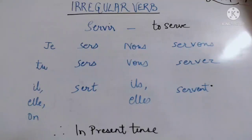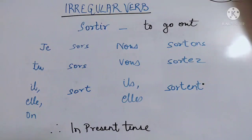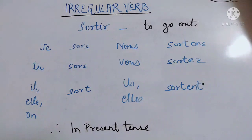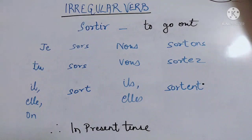'Sortir' means 'to go out'. Remove the infinitive part. S-O-R-T is the stem. Conjugation meanings: I go out, you go out, he goes out, we go out, you go out formally, and they go out. Spellings: 'je sors' — S-O-R-S, same for 'tu'. 'Il sort' — S-O-R-T. 'Nous sortons' — S-O-R-T-O-N-S. 'Vous sortez' — S-O-R-T-E-Z. 'Ils sortent' — S-O-R-T-E-N-T.